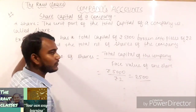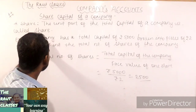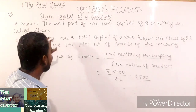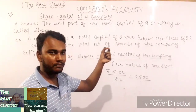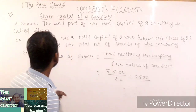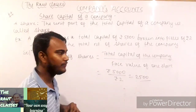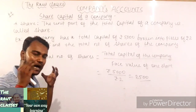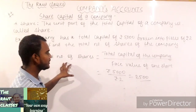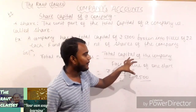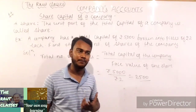That particular share value can be used to divide the total capital of the company so as to obtain the total number of shares. For your convenience, I have explained here with one example: suppose a company has a total capital of rupees 5000, broken into pieces of rupees 2 each. Find the total number of shares of the company. The total number of shares equals the total capital of the company divided by the face value of one share.